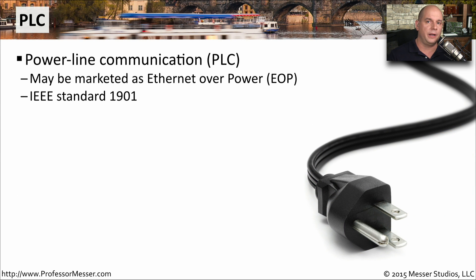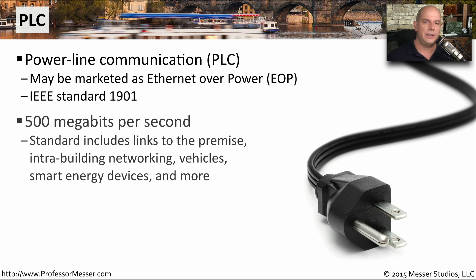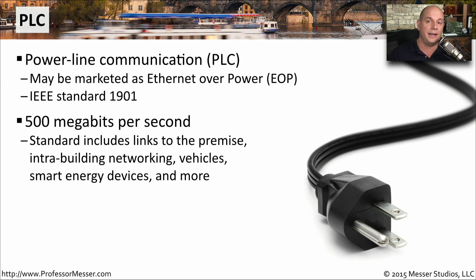A niche kind of network connection is PLC, or power line communication. You might also see this marketed as ethernet over power, or EOP. It's an IEEE standard 1901, and the idea is that we'd be able to run standard ethernet connections over the power lines that are already in our buildings. The standard supports speeds of up to 500 megabits per second. It's very common to see this used for the final link into a premise, within a single building, or for connecting smart devices that you plug in to charge — also connecting them to the ethernet network at the same time.